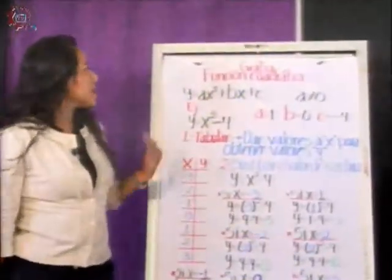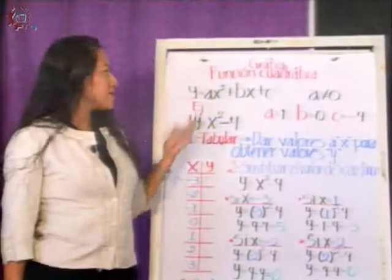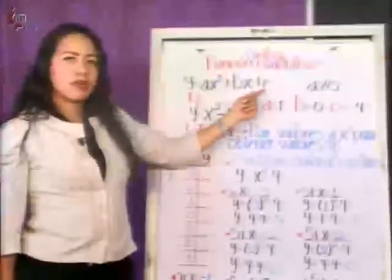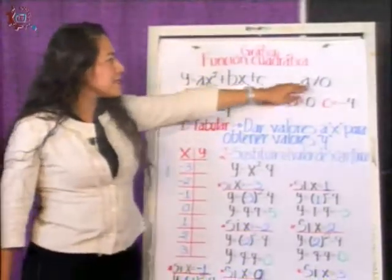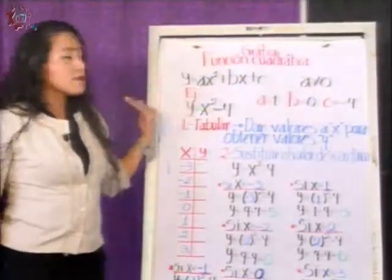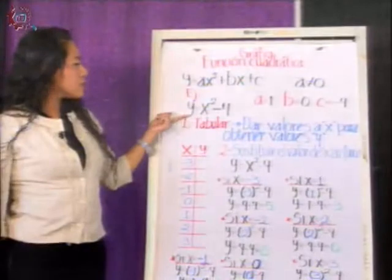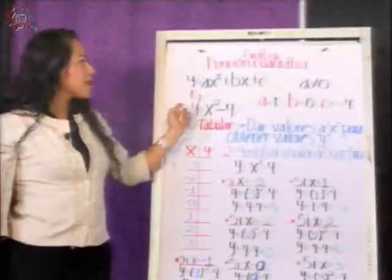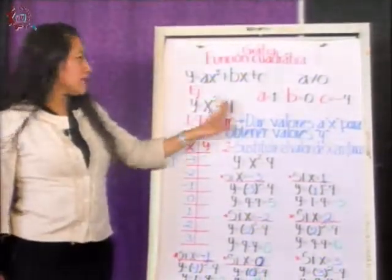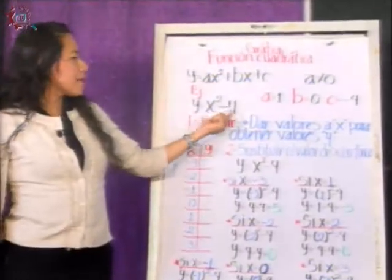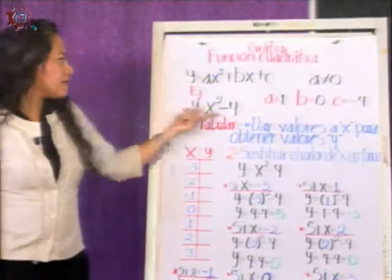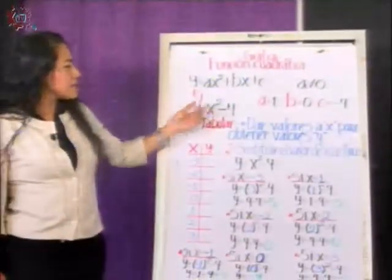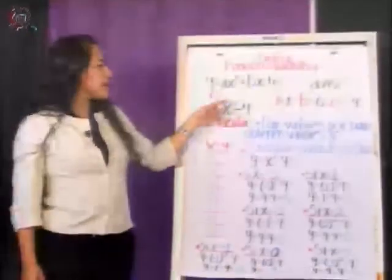We will start by saying what is a quadratic function. Generally they have this form, ax² más bx más c, where a, b, and c are the coefficients. Here we have to consider that a always has to be different from 0. Now let's put an example. Here we have that the function is y igual a x²-4, where the coefficient a is 1, the coefficient b is 0 because here we have no number, and minus 4 would be the coefficient c. This is my quadratic function. To say that it is quadratic is because the variable x is elevado al cuadrado.